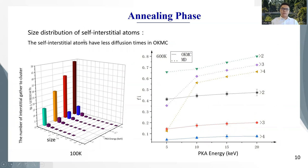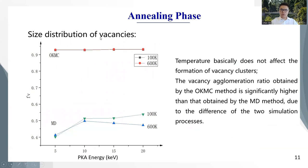Besides, the size distribution of self-interstitial atoms is also calculated, and the vertical axis of the right picture is the ratio of self-interstitial atoms gathered into clusters. In our simulation, the ratio is much lower than the MD simulation, and the size distribution of vacancies is also simulated. In this picture we can see that temperature does not affect the formation of vacancy clusters.